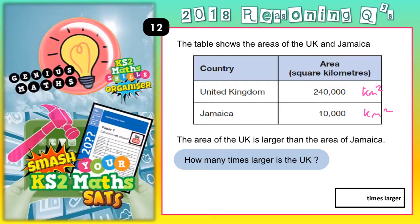But how many times larger? All we need to do is figure out: what do we times 10,000 by? What's the mystery number that you times 10,000 by to get 240,000? Well, there's an easy way of doing this. Because the amount of zeros are the same — there are four zeros on both numbers — you can almost ignore the zeros and say: what do you times 1 by to get 24? Well, that would be 24.